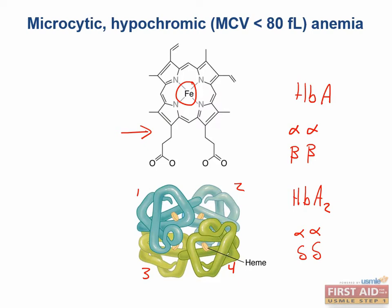Microcytic anemias arise either from a problem making heme or a problem making globin. Globin issues include alpha and beta thalassemias. Problems making heme may occur in iron deficiency, which is by far the most common cause of any microcytic anemia. If you see small RBCs on a blood smear, a low hemoglobin, or an MCV less than 80 on CBC, think of iron deficiency first. Other causes include lead poisoning and sideroblastic anemias.